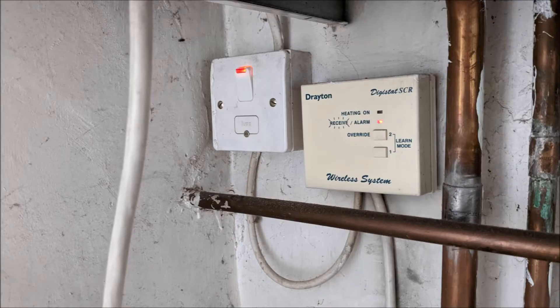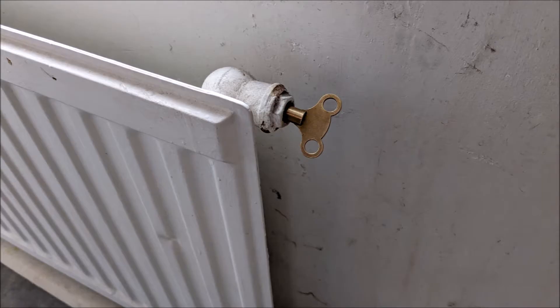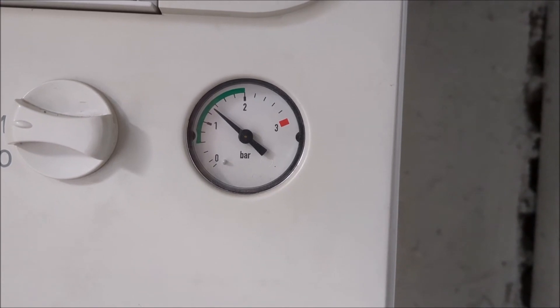Turn on the wall switch and turn on the boiler. Turn on the heating and bleed the radiators to remove air from the central heating system. Then top up the pressure in the boiler.